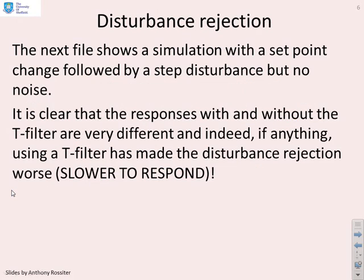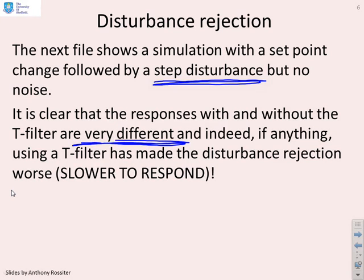Disturbance rejection: the next file shows a simulation with a setpoint change followed by a step disturbance, but no noise — looking at each facet of uncertainty one at a time. Now, because we're dealing with uncertainty, whether you have a T-filter or not makes a big difference to the responses, because the T-filter affects how uncertainty goes into the predictions and therefore affects the controller's sensitivity.